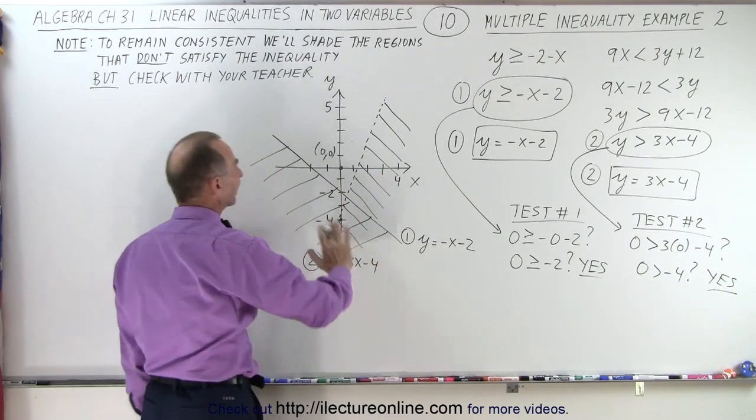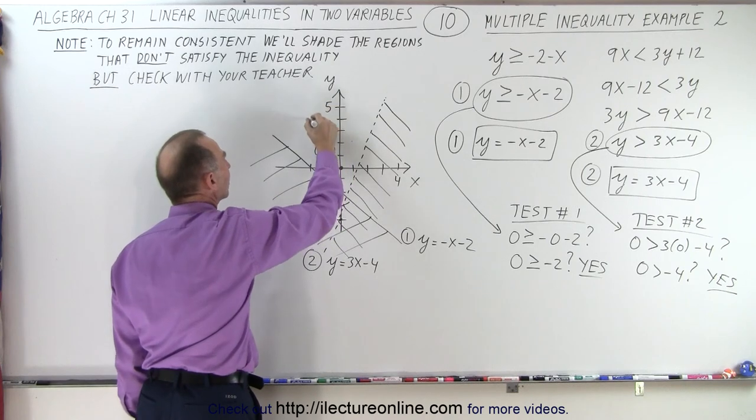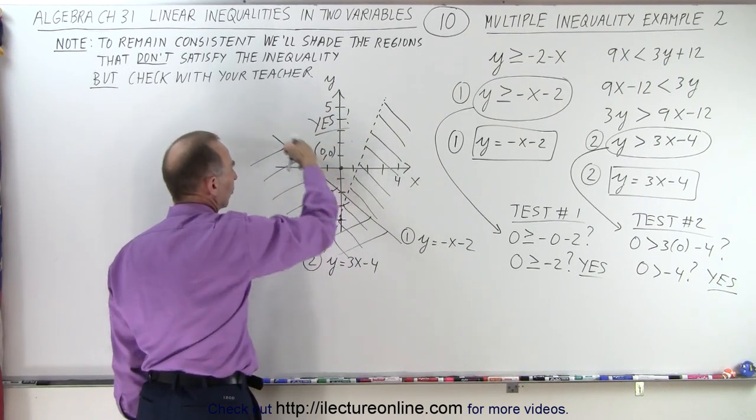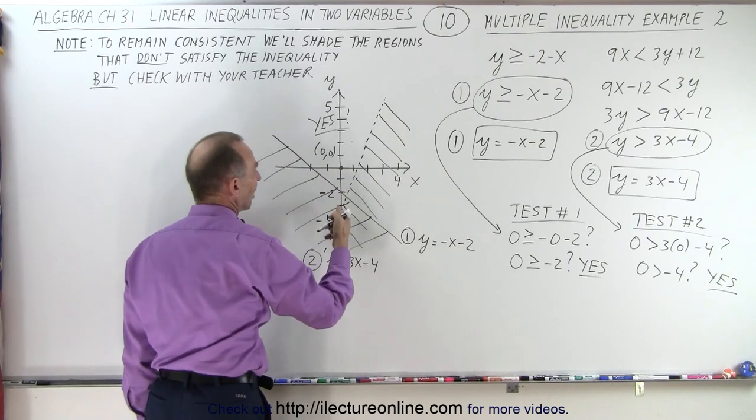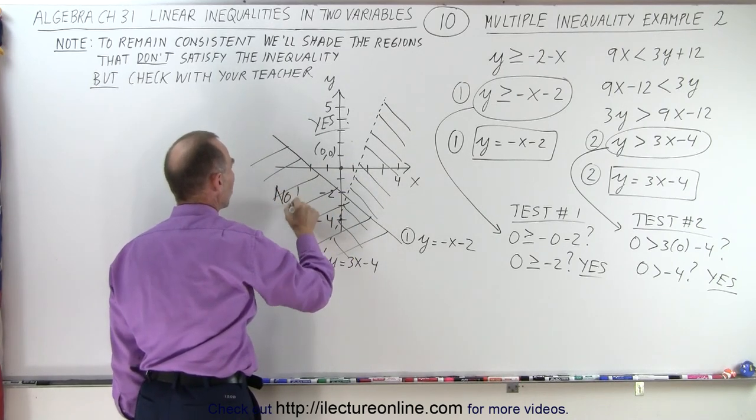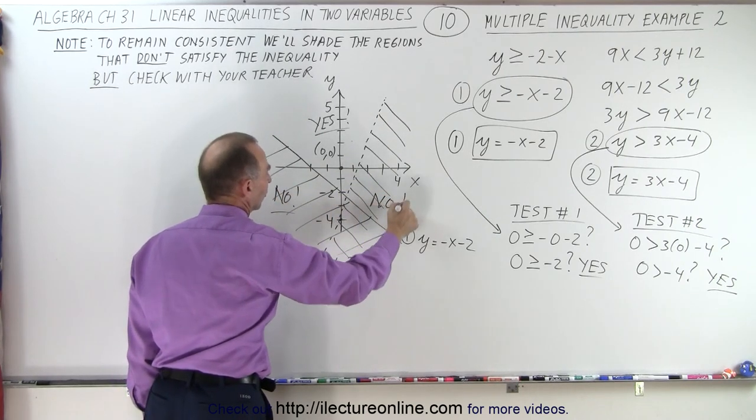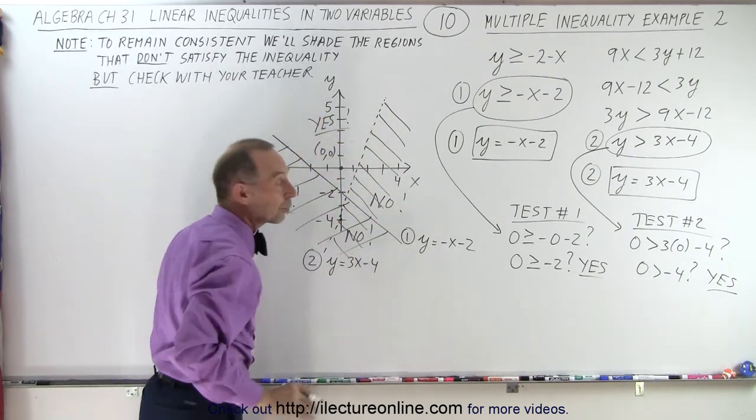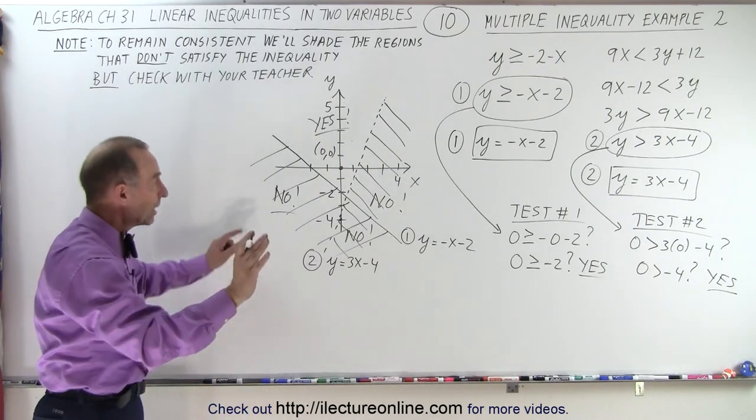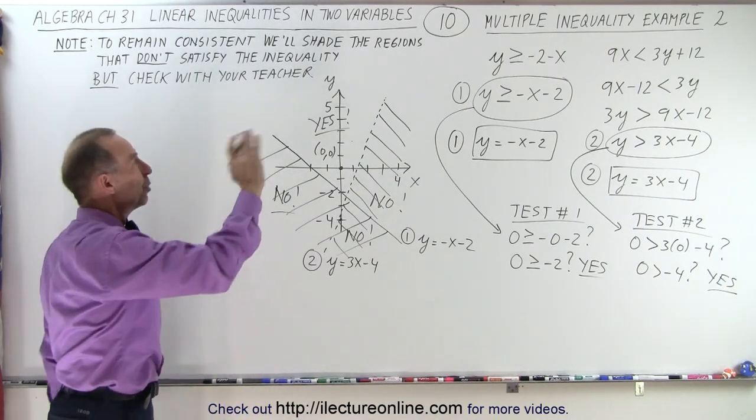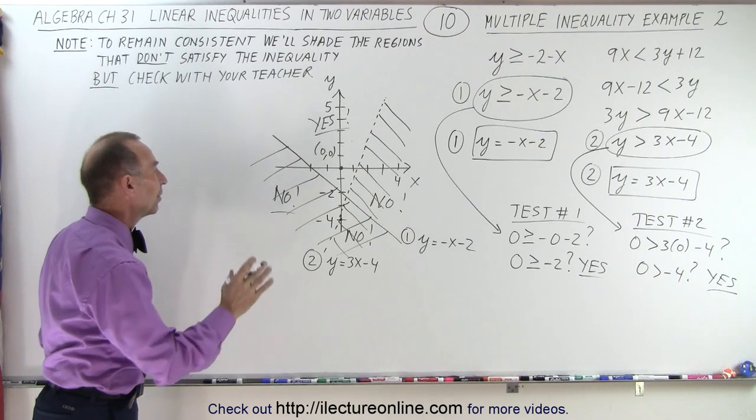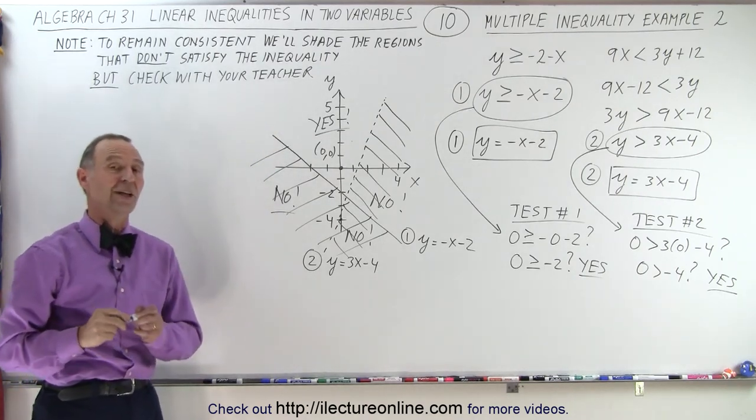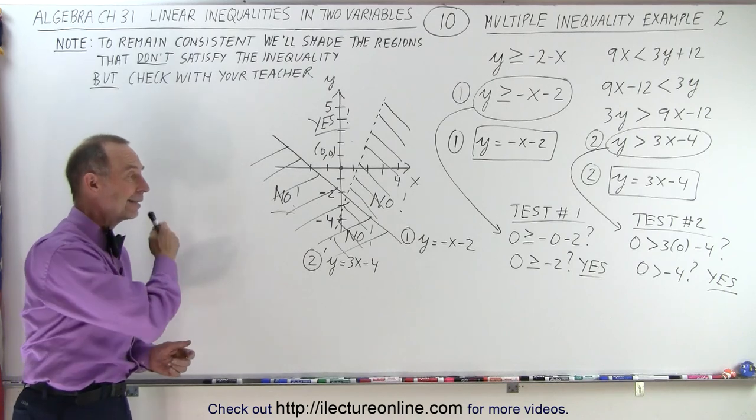Like this, and so then cleanly, this is the region right here that satisfies the inequality, including the solid line but not the points on the dashed line. So here this is no, and here this is no, here this is no, this doesn't satisfy, but this region does satisfy the inequality. Again, shading away the regions that do not when you have multiple inequality problems makes it a lot easier to cleanly find the region that does satisfy the inequality, and that is how it's done.